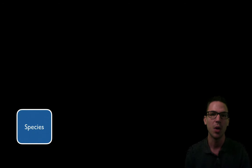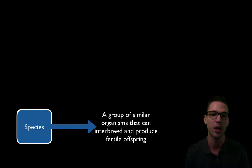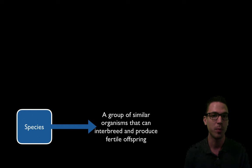Before we can understand ecosystems as a whole we should understand how they are organized. We'll find that ecosystems are organized from a small level and then get broader and broader. The smallest level of organization is the species level. Every ecosystem has species living within it, and all we mean by species is a group of similar organisms that can reproduce with each other and also produce fertile offspring. Some different species can reproduce but produce infertile offspring, like the liger from a tiger and lion.